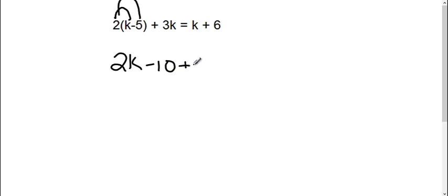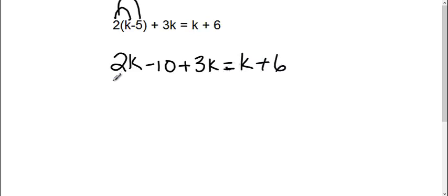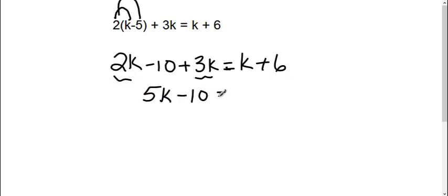Now, I still have plus 3k equals k plus 6. Okay, my next step is combining my like terms. So, I have a 2k and a 3k that I can combine to get 5k. So, I have 5k minus 10 equals k plus 6.